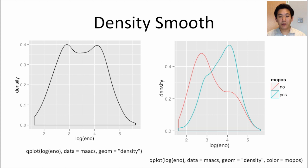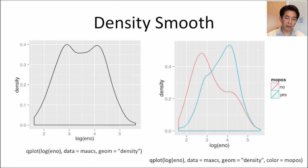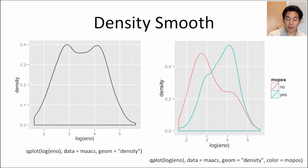Another way to visualize this data is with a density smooth. Adding the geom density to the log ENO variable shows at least two peaks. When separating by color using color equals MOPOS, you can see that the two peaks roughly correspond to whether children are allergic to mouse allergen or not. This is a nice way to visualize this kind of one-dimensional data.